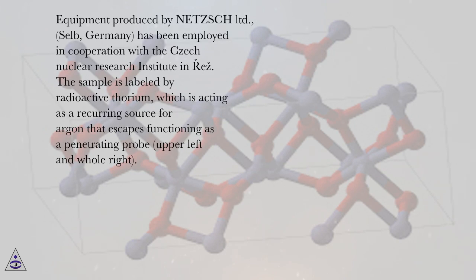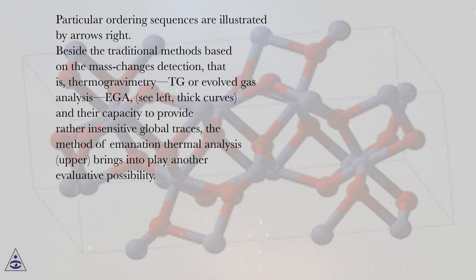The sample is labeled by radioactive thorium, which is acting as a recurring source for argon that escapes functioning as a penetrating probe, upper left and whole right. Particular ordering sequences are illustrated by arrows right.